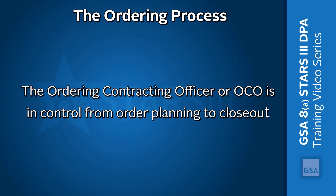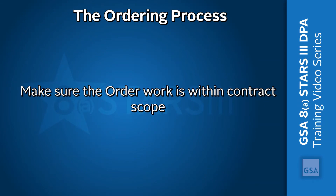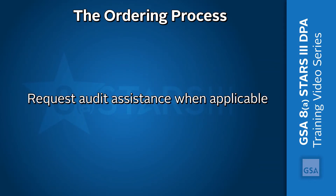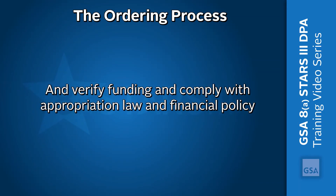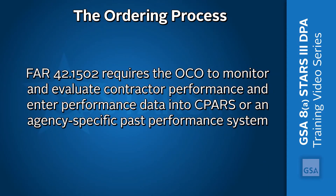The ordering contracting officer, or OCO, is in control from the order planning to close out. As a part of their job, they must comply with all GWAC terms and conditions along with FAR and agency guidance, make sure the order work is within contract scope, ensure that all applicable contractors are provided a fair opportunity to be considered prior to award for orders exceeding the 8A competitive threshold, request audit assistance when applicable, verify funding and comply with appropriation law and financial policy. If a core COTR is assigned, the OCO must ensure that the extent of their authority and responsibilities are clearly defined. FAR 42.1502 requires the OCO to monitor and evaluate contractor performance and enter performance data into CPARS or an agency-specific past performance system.